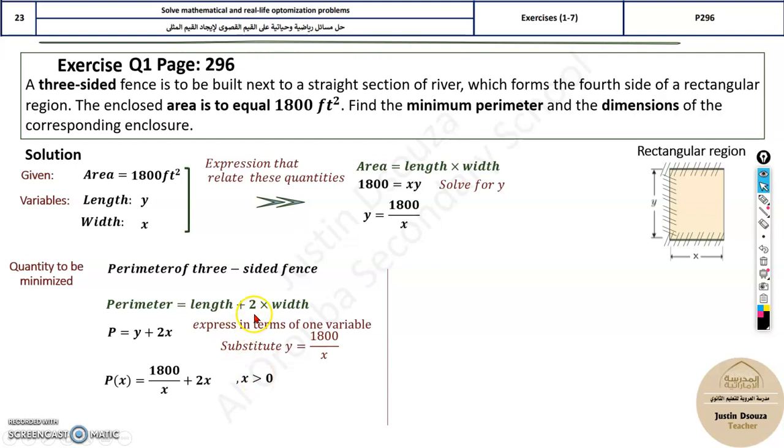Now, p with respect to x will be, instead of y, 1800/x plus 2x. Now, look over here. This is very important. x is greater than 0. Can it be less than 0? No, obviously, it's a real-world thing. You can't have dimension 0, or less than 0. So that's why we have this.